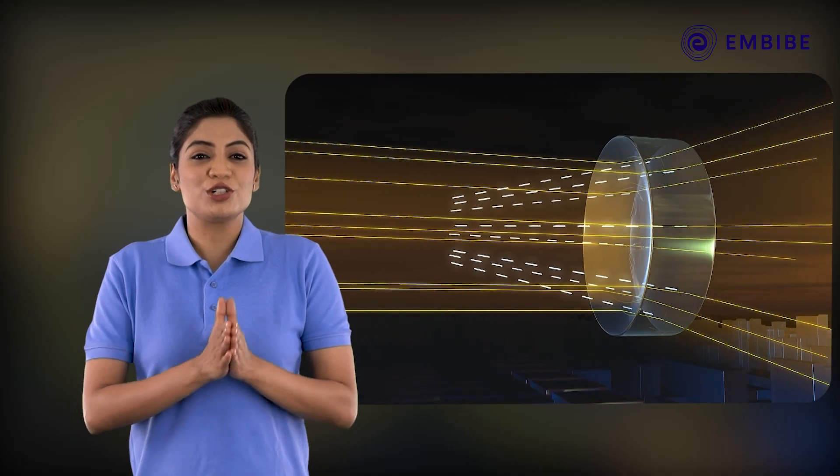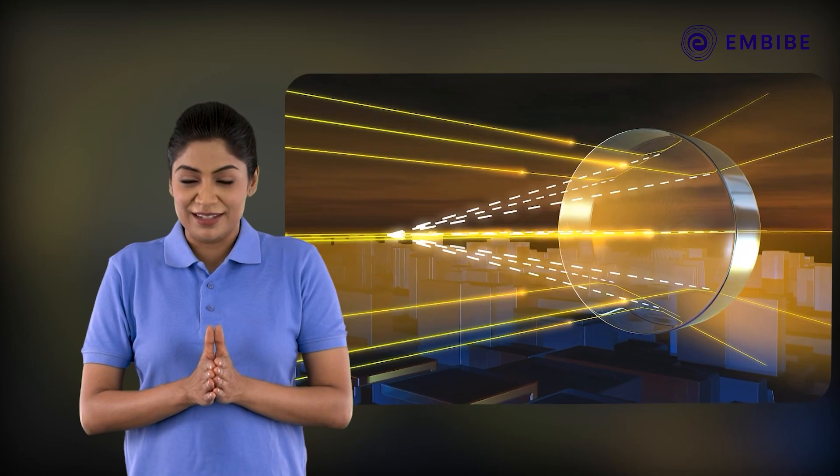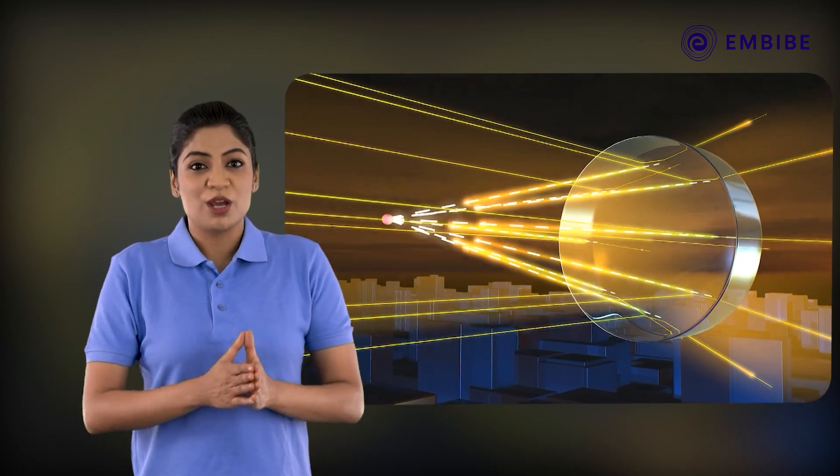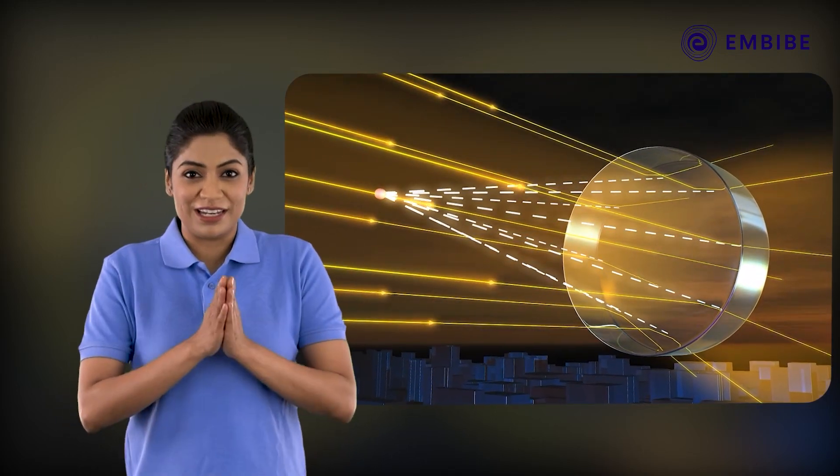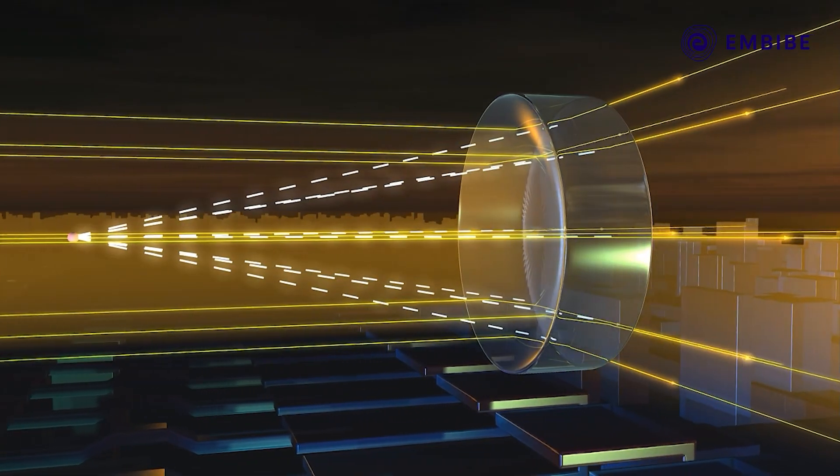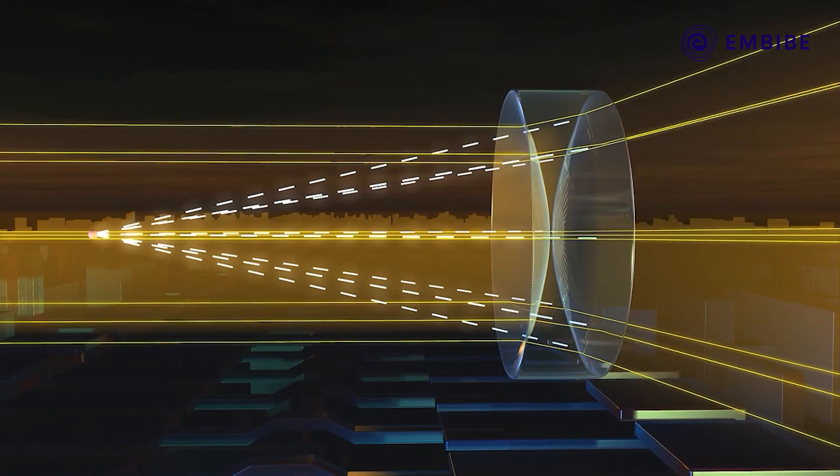If the divergent rays are extended backward, then they appear to meet at one point on the principal axis on the same side of the lens as the object. This point is called the focal point of the concave lens.